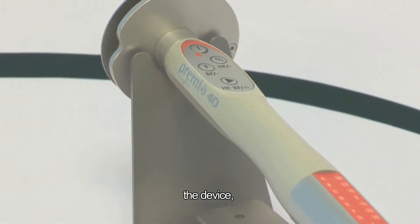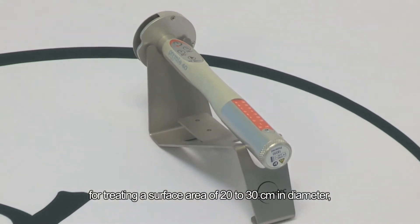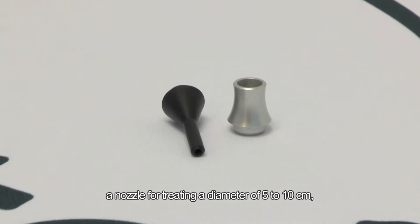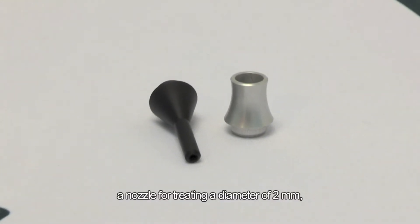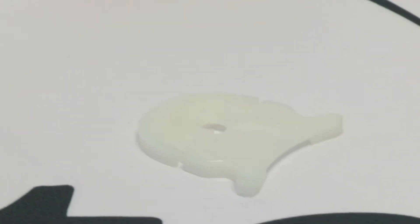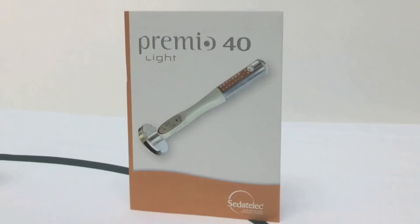The case contains the device for treating a surface area of 20 to 30 cm in diameter, a nozzle for treating a diameter of 5 to 10 cm, a nozzle for treating a diameter of 2 mm, a disc mount, a USB charger, a battery, and a user guide.